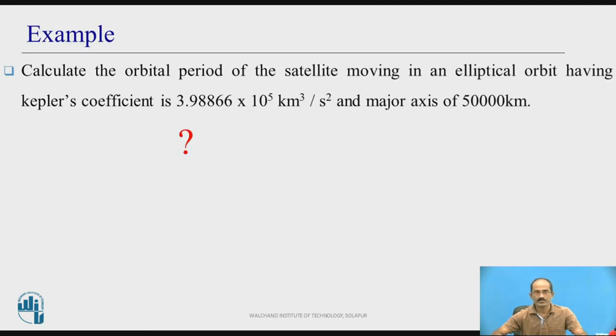Let us see one example. Calculate the orbital period of the satellite moving in an elliptical orbit having Kepler's coefficient 3.98866 × 10⁵ km³/s² and major axis of 50,000 kilometers. He has given Kepler's coefficient μ = 3.98866 × 10⁵ and major axis 2A = 50,000 kilometers.